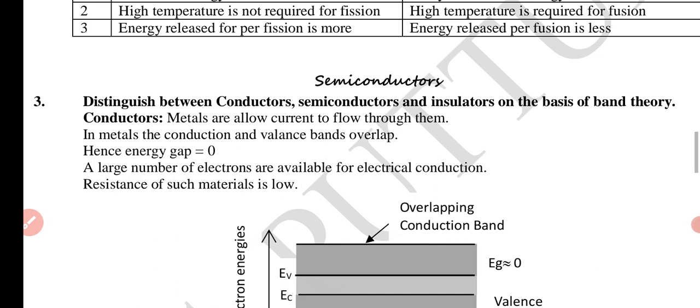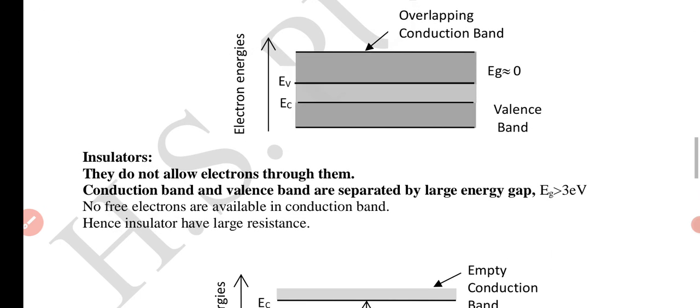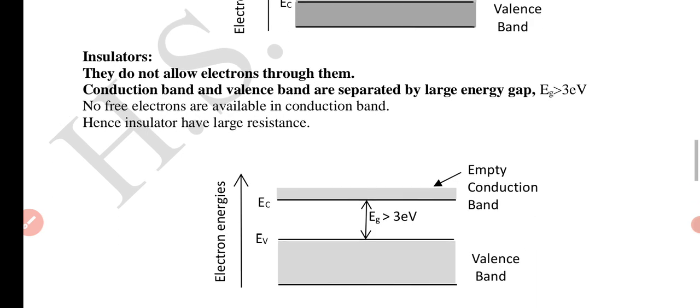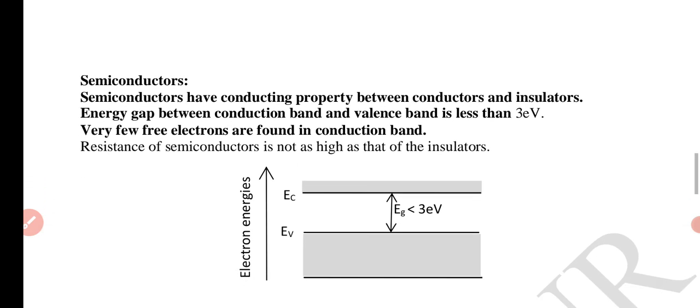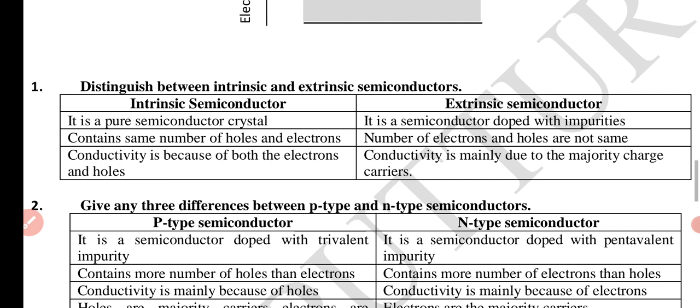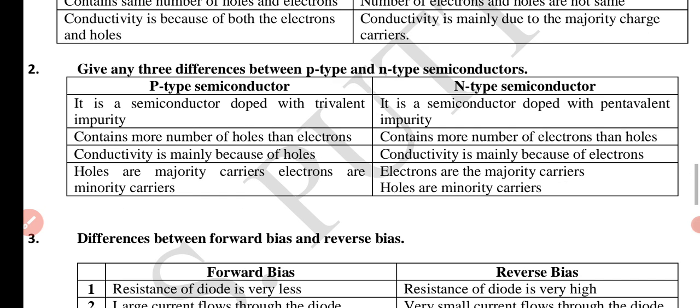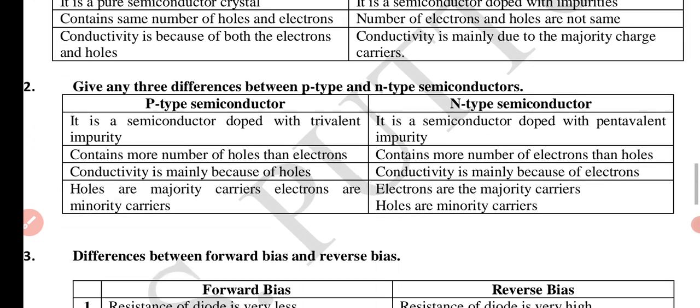Semiconductors chapter. Distinguish between conductors and semiconductors and insulators. Insulators do not allow electrons through them. Conduction band and valence band are separated by large gap. Semiconductors have conducting property between conductors and insulators. Energy gap between conduction band and valence band is less than three electron volts. Very few free electrons are found in conduction band. Distinguish between intrinsic and extrinsic semiconductor. Give any three differences between P-type and N-type semiconductor.